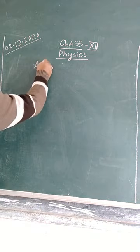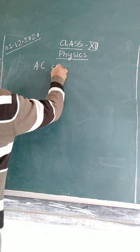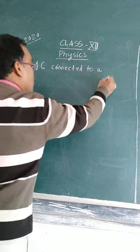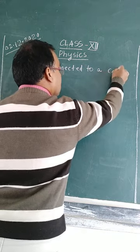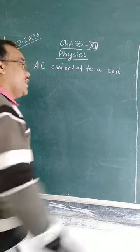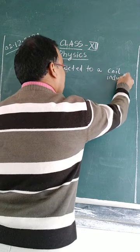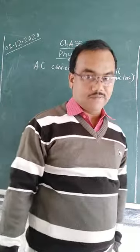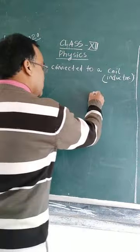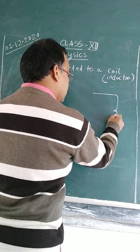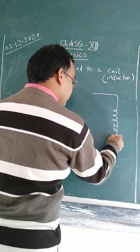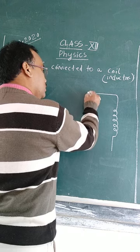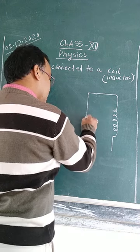AC alternating current connected to a coil. Coil, better call it an inductor. Coil का दूसरा नाम क्या है, in AC connected to an inductor. इसको an alternating current से connected किया गया है.